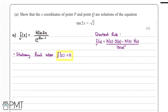Since f(x) is something divided by something else, we need to use the quotient rule. The quotient rule gives f'(x) as the derivative of the numerator multiplied by the denominator, minus the numerator multiplied by the derivative of the denominator, all divided by the denominator squared. Let h(x) be the numerator, equal to 4 sin(2x), and let g(x) be the denominator, equal to e to the power of root 2x minus 1.